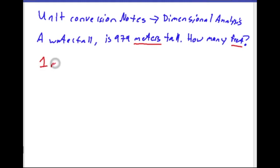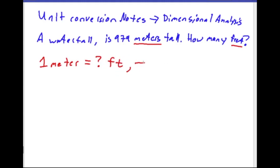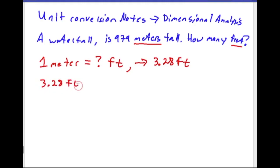The question is: one meter is equal to how many feet? Fortunately, I give you a unit conversion cheat sheet, and you'll find that one meter is equivalent to about 3.28 feet. So I can go ahead and write my conversion: 3.28 feet is equal to one meter.